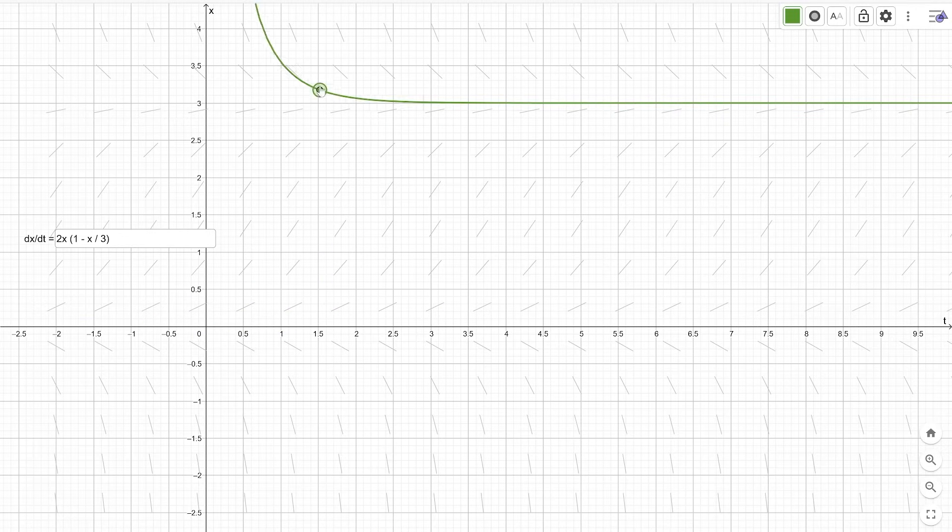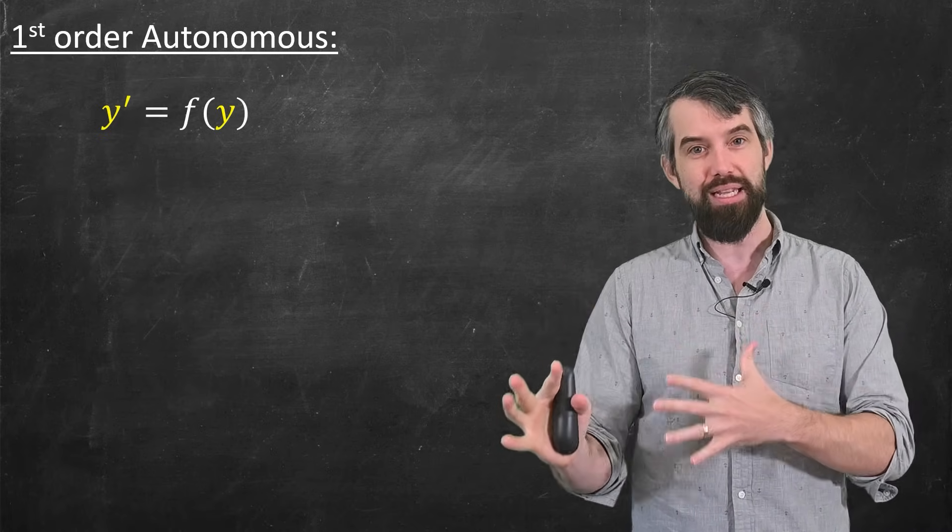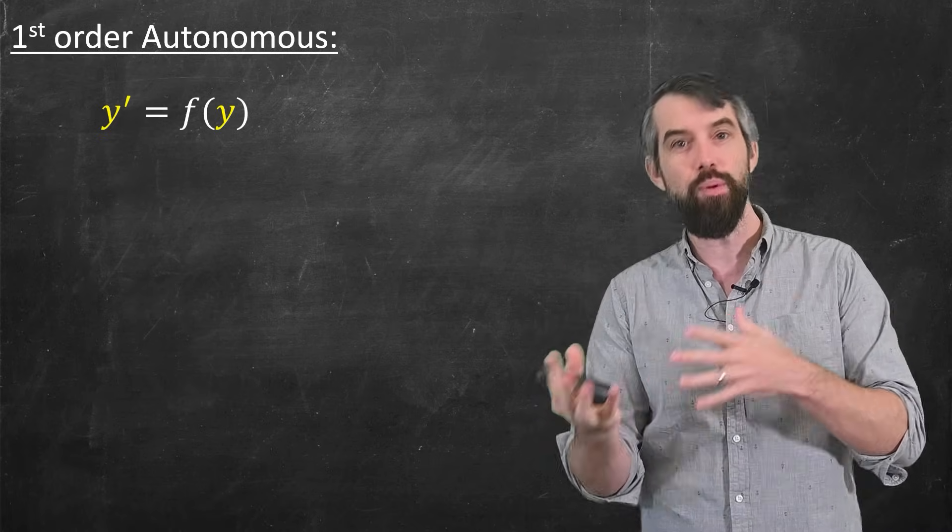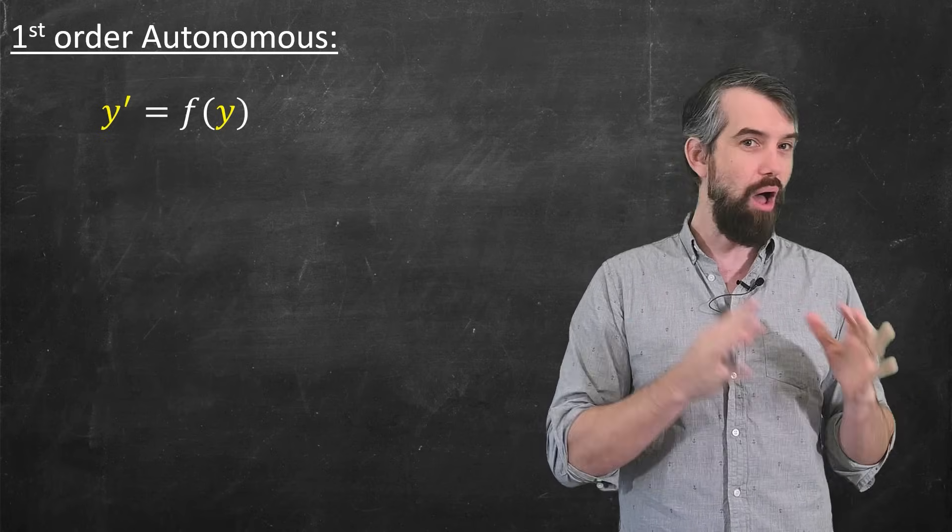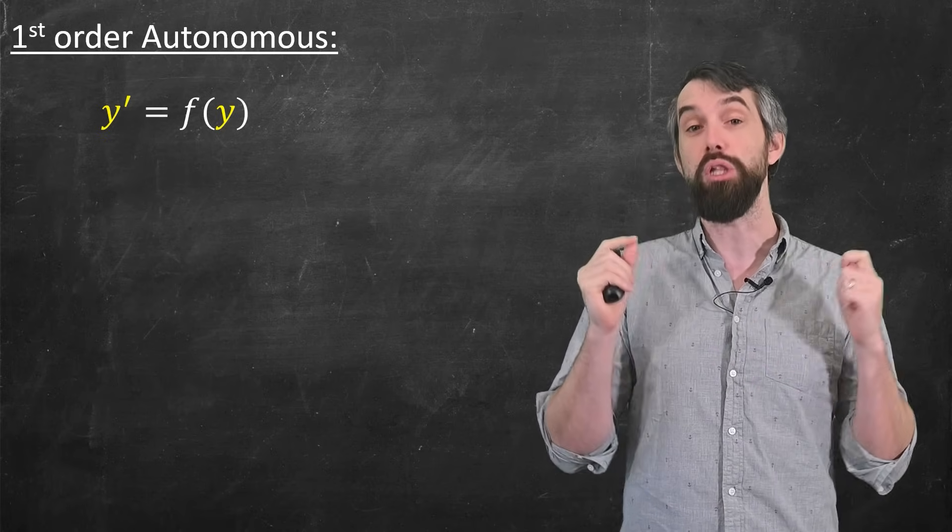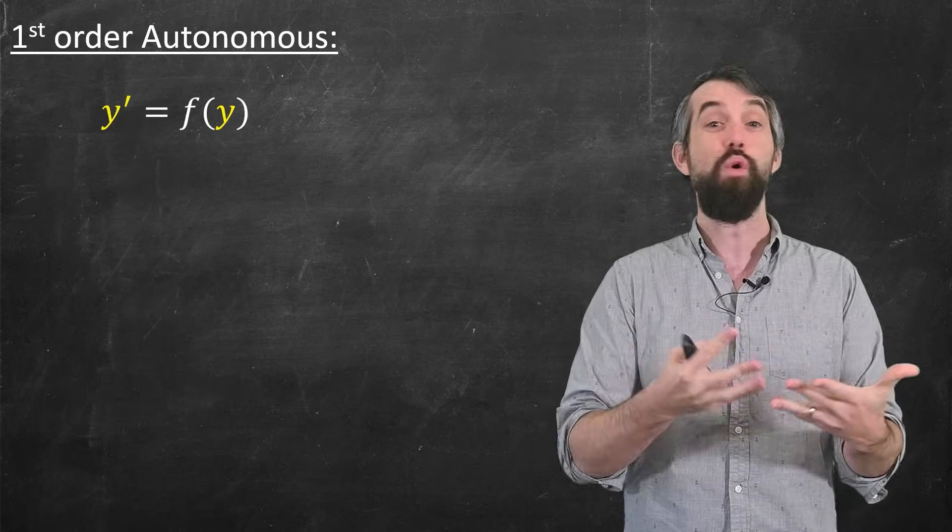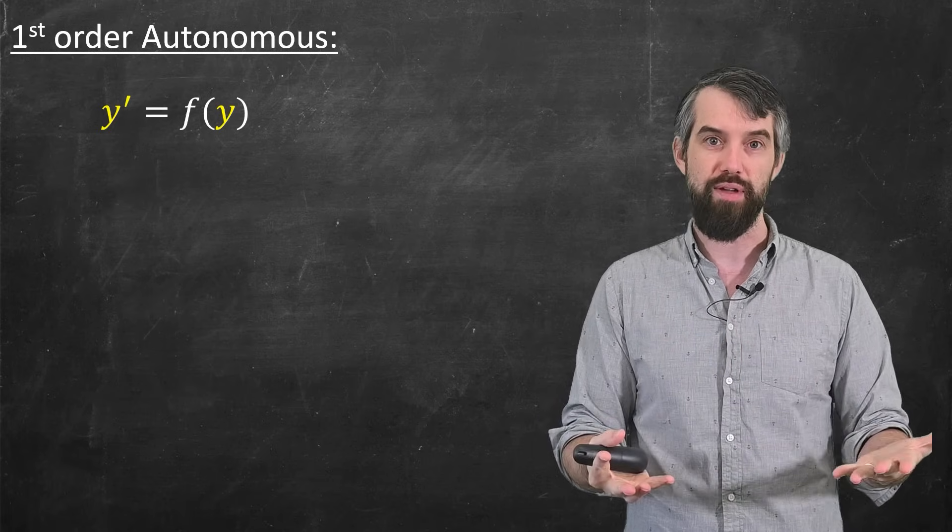And since it only depends on y and not x, you get, well, these lovely little pictures, and there's sort of a whole separate set of analysis that you can do about equilibrium points, whether they're stable, whether they're unstable. I'll link a video down below. But you should just be on the lookout for autonomous equations because there's sort of a separate set of questions that goes with them beyond just, can you solve it?